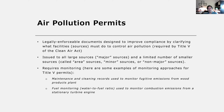The use of this permitting approach requires monitoring. Some examples of monitoring approaches used for Title V permits include checking maintenance and cleaning records to monitor fugitive emissions from a wood products plant, or fuel monitoring — such as monitoring the water-to-fuel ratio — to monitor combustion emissions from a stationary turbine engine.